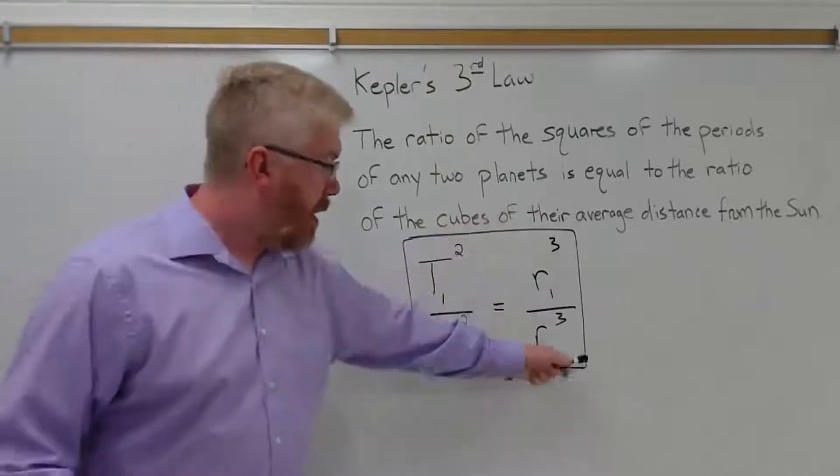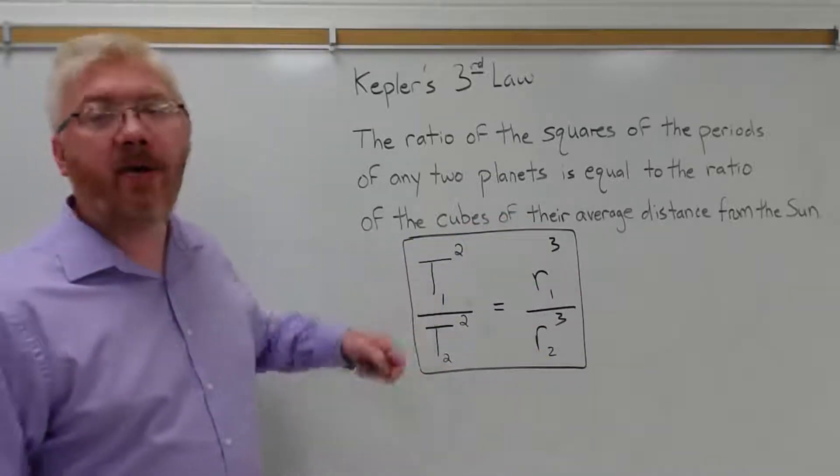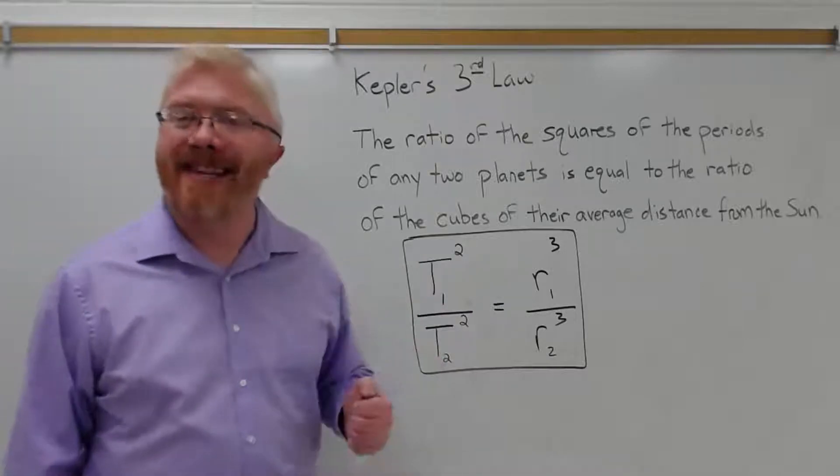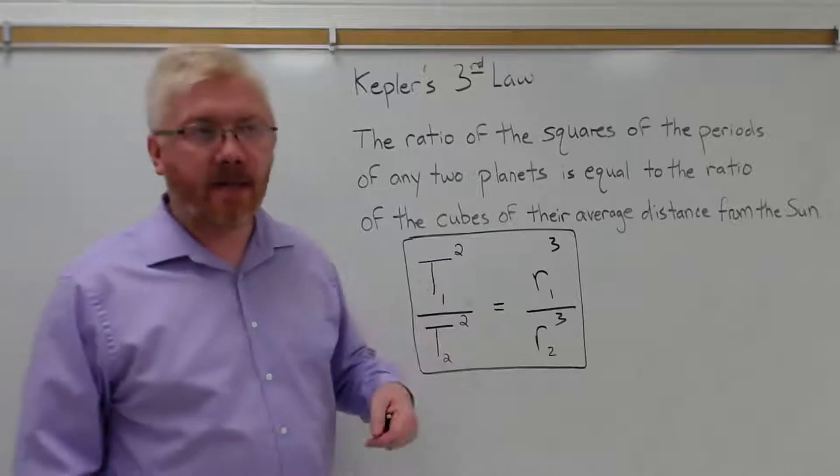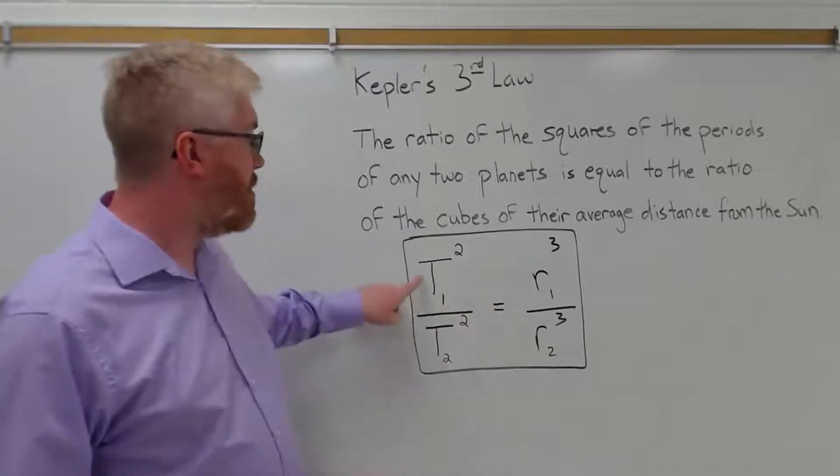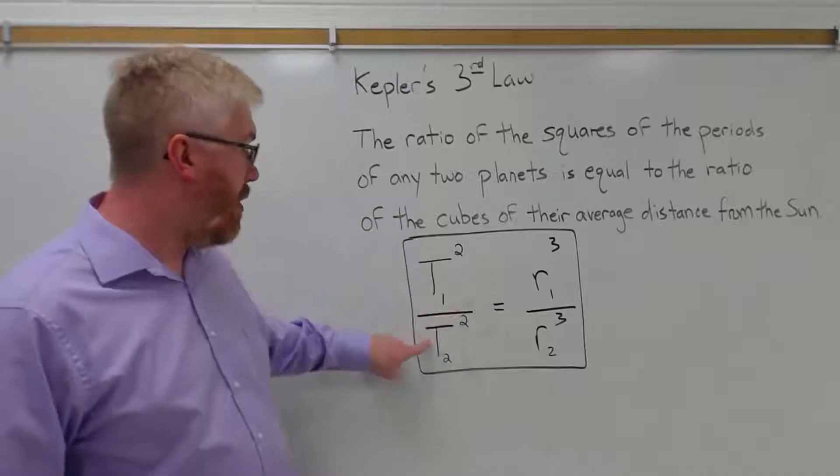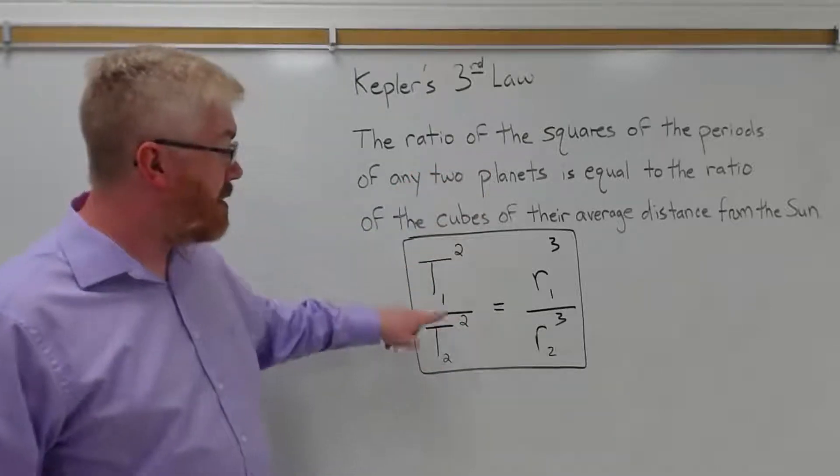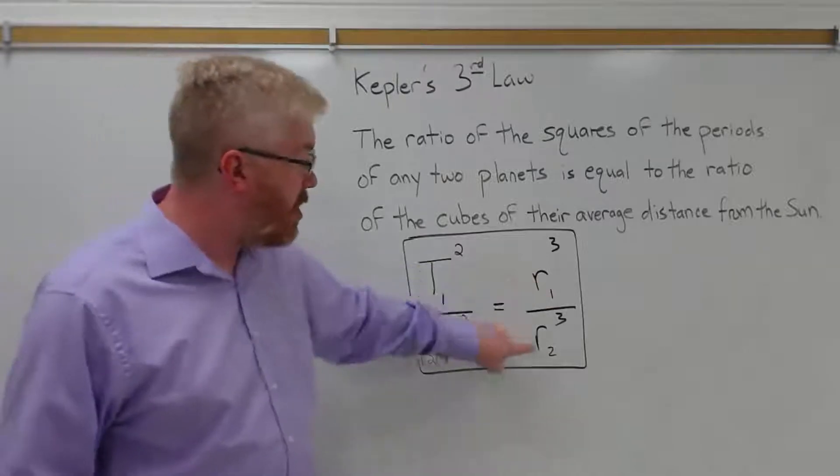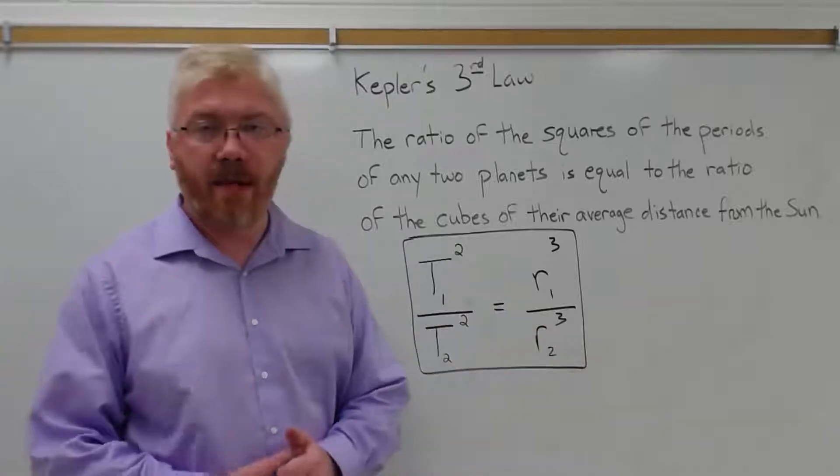It's equal to the ratio of the cubes of their average distances from the Sun. So in equation form, the period of planet one, the period is given by the capital T, is a time, but it's not small t, capital T is used. Capital T, period of the first planet squared over the period of the second planet squared, so the ratio of the squares of the periods, is equal to the ratio of the cubes of the average distances from the Sun.